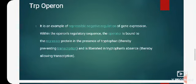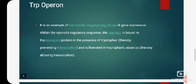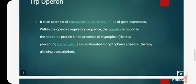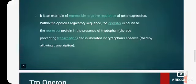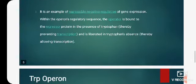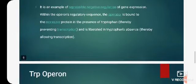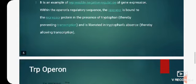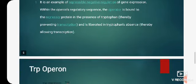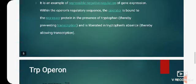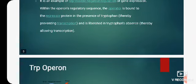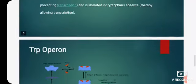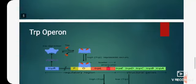So students, this TRP operon is an example of repressible negative regulation of gene expression. Within the operon's regulatory sequence, the operator is bound to the repressor protein in the presence of tryptophan, thereby preventing transcription, and is liberated in tryptophan's absence, thereby allowing transcription.